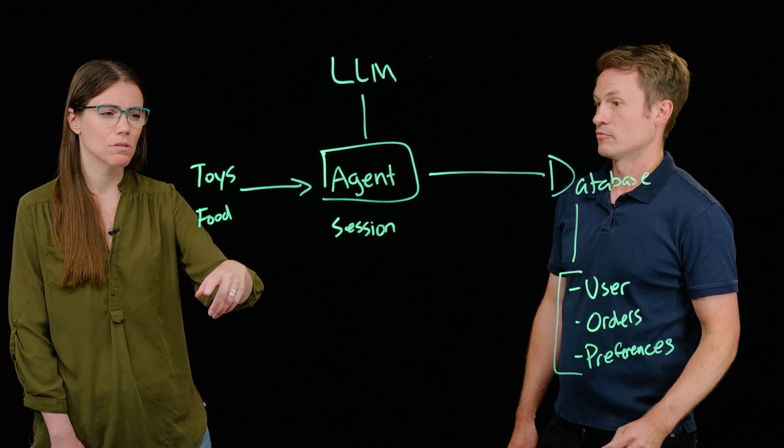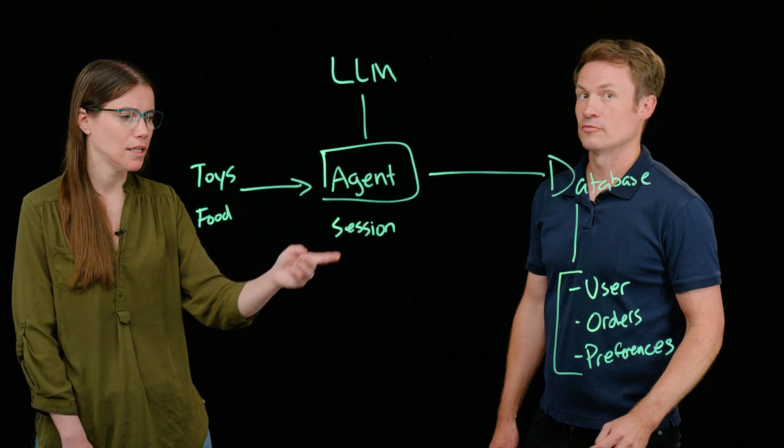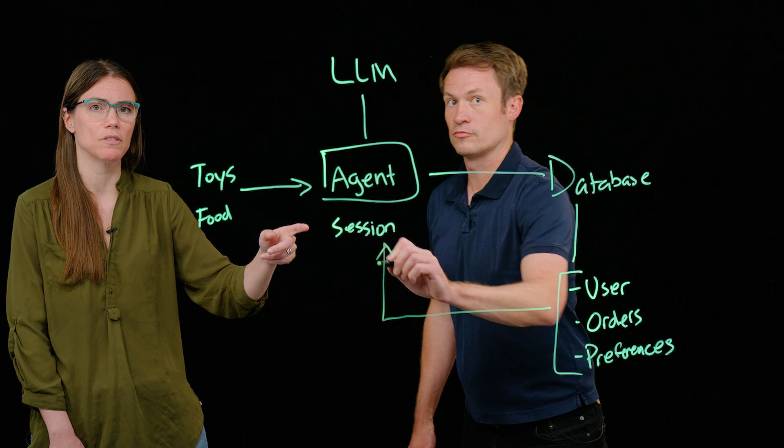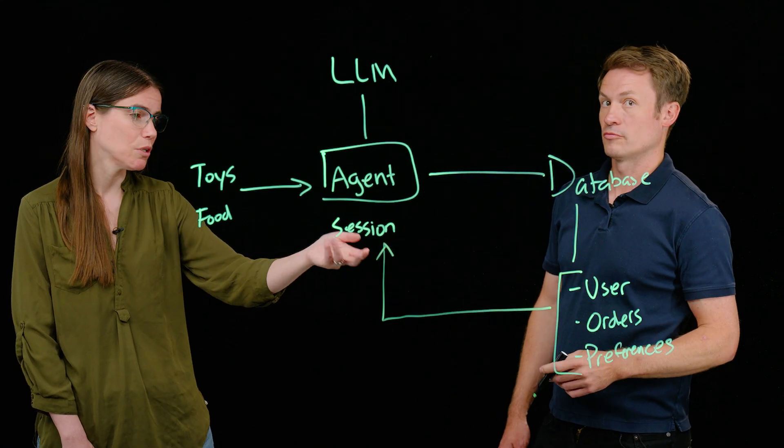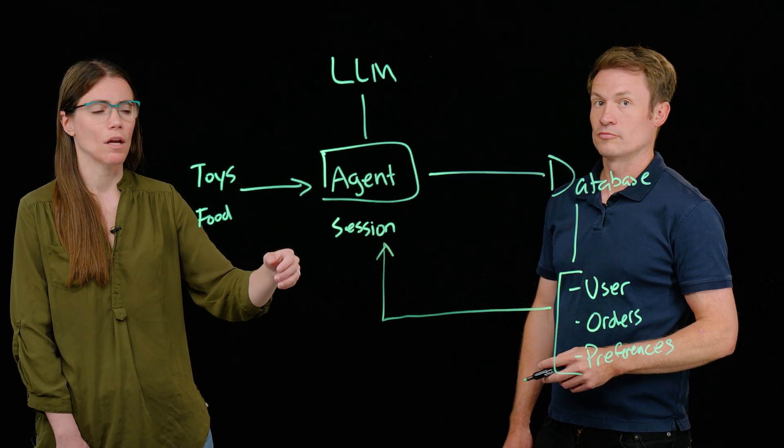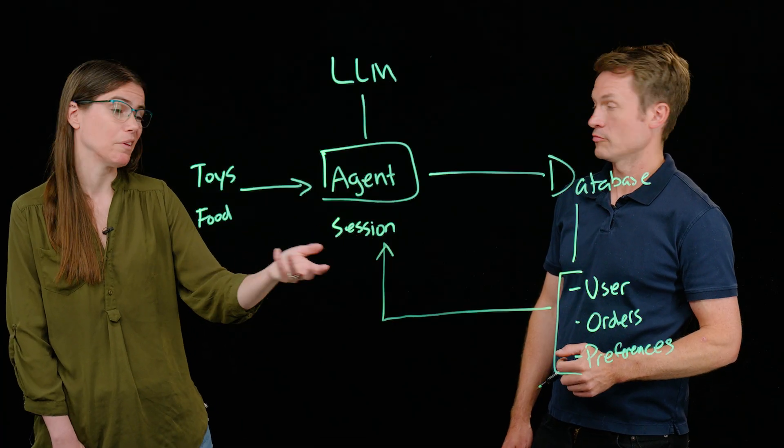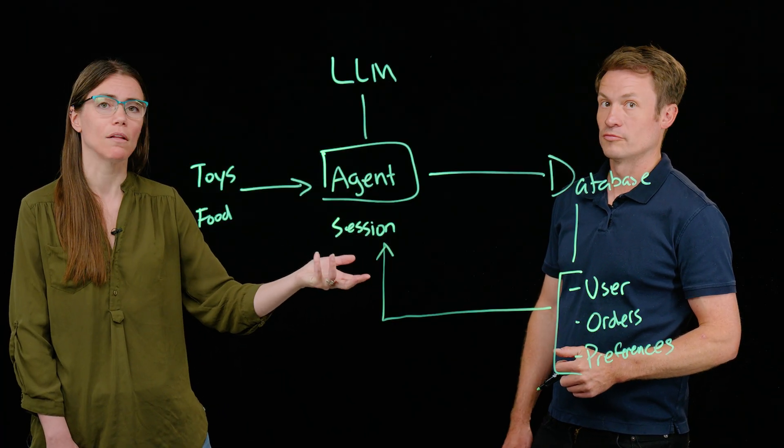When the agent starts up a specific session, I need to retrieve a subset of that information, though, because that could be a lot. And maybe not all of it is relevant to this session. Maybe we only want the most recent couple orders and just some of the information about my preferences relevant to the current query, like types of cat food that my cat likes.